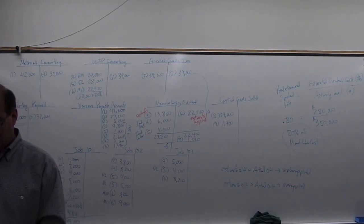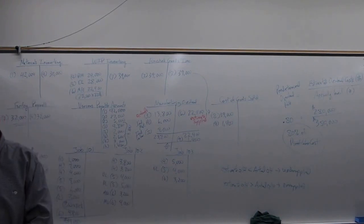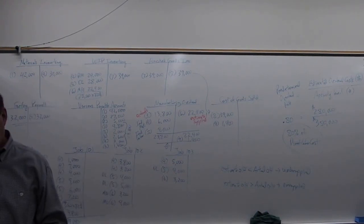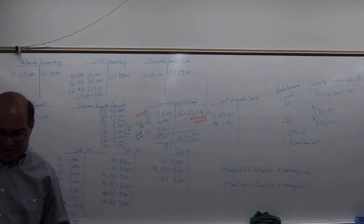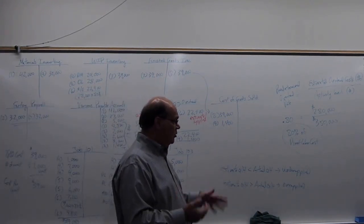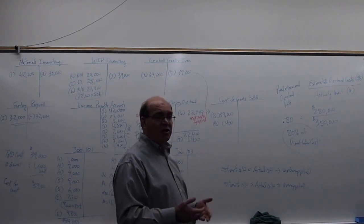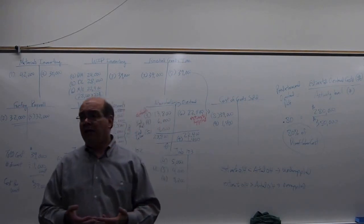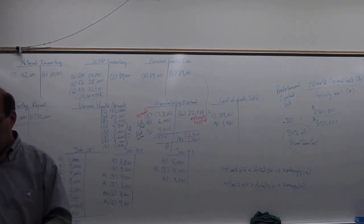Over and under applied manufacturing overhead is Learning Objective 5 on page 771, discussed on page 772. The book lists actual first then applied, which can be confusing. Always look at the applied or estimated side: if it's too low, you're under-applied; if the applied or estimated is too high, you're over-applied. That helps avoid getting it backwards.